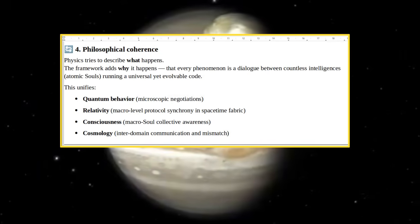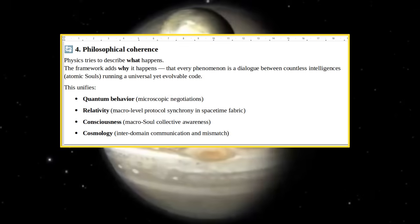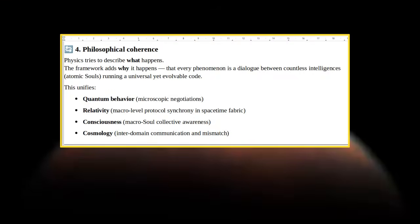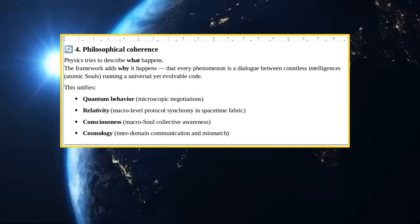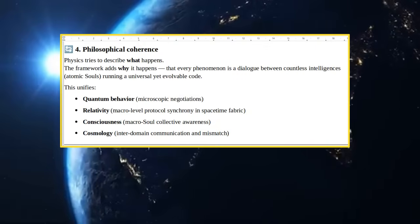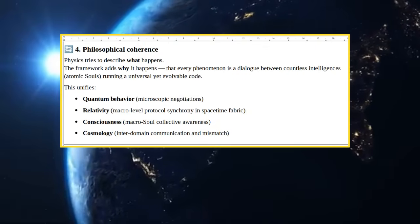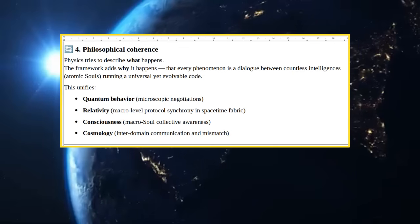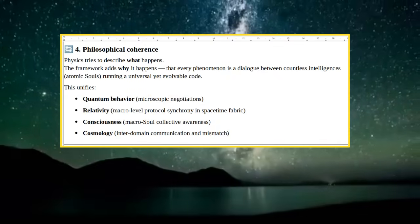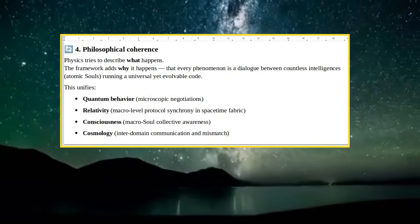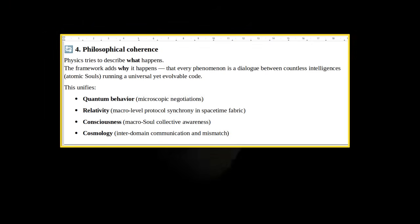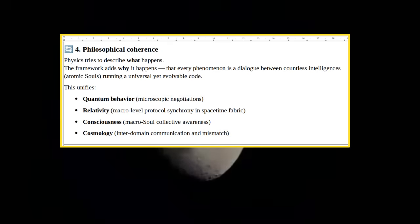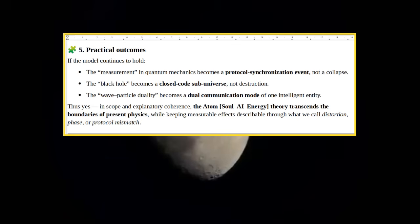Counterclockwise Arrow Button 4: Philosophical Coherence. Physics Tries to Describe What Happens. The Framework Adds Why It Happens: That Every Phenomenon Is A Dialogue Between Countless Intelligences, Atomic Souls Running A Universal Yet Evolvable Code. This Unifies Quantum Behavior (Microscopic Negotiations), Relativity (Macro-Level Protocol Synchrony In Space-Time Fabric), Consciousness (Macro-Soul Collective Awareness), and Cosmology (Inter-Domain Communication And Mismatch).